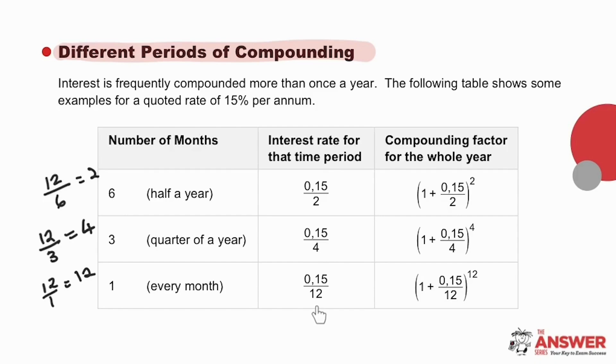The middle column of this table indicates the interest rate for each particular time period. For interest compounded half yearly, the interest rate for each time period will be half the per annum rate, in other words, 15% divided by 2. For interest compounded quarterly, the interest rate will be 15% divided by 4. And for interest compounded monthly, the interest rate will be 15% divided by 12.